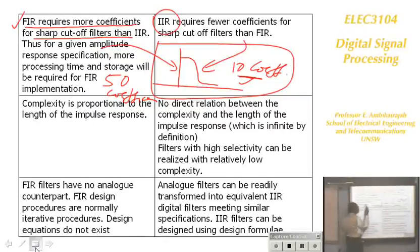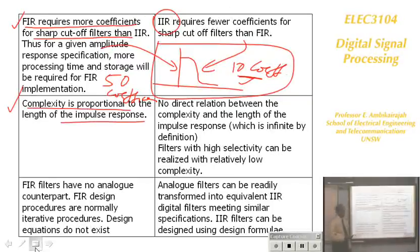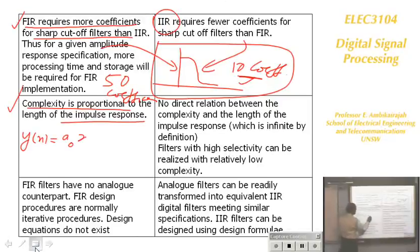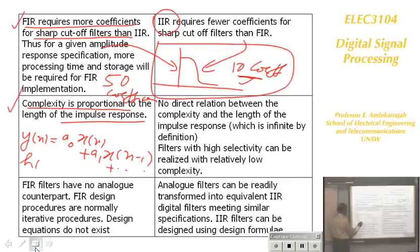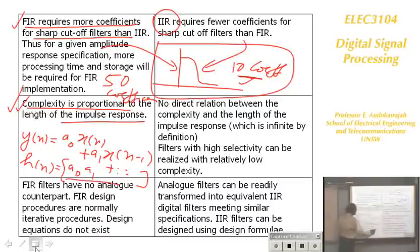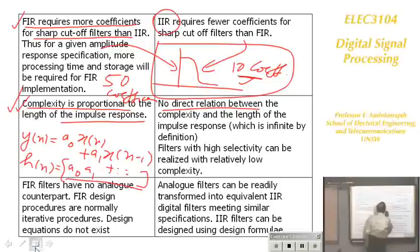FIR filter always requires more coefficients for the same characteristics. FIR filter complexity is proportional to the impulse response, because the impulse response coefficients are the coefficients of the FIR filter. If you write the FIR filter: Y(N) equals A0·X(N) plus A1·X(N-1) and so on, the complexity is proportional to the length of the impulse. The order of the filter is the same as the length of the impulse.